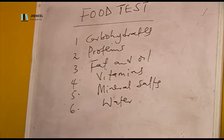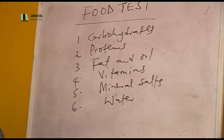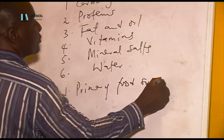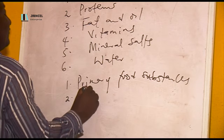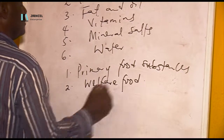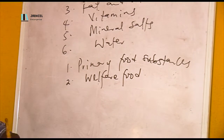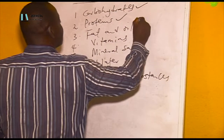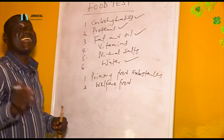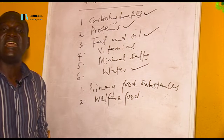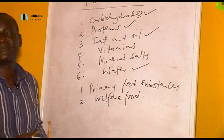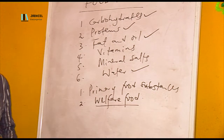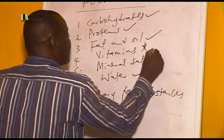These six classes are grouped into two: primary food substances and welfare food. The primary food substances are required in large quantities in the body — carbohydrates, proteins, fat and oil, and water. The welfare foods are required in small quantities in the body, and these are vitamins and mineral salts.